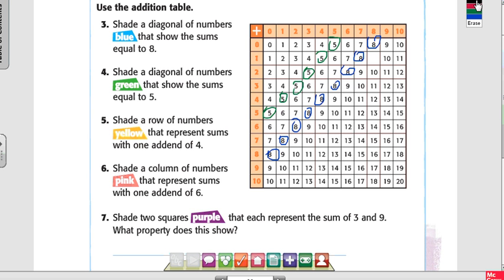Shade a row of numbers yellow that represents sums with one addend of four. Meaning one of the digits, when I do this, one of them has to be four. So here's four. That means all of these right here. That represents sums with one addend of four.